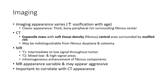Imaging appearance: the classic X-ray appearance is a bony peripheral rim surrounding a fibrous central area. On CT, there is an expansive mass with soft tissue density, with a central area surrounded by ossified fibroma. CT may be indistinguishable from fibrous dysplasia.